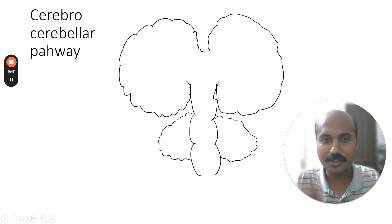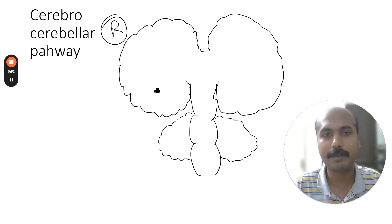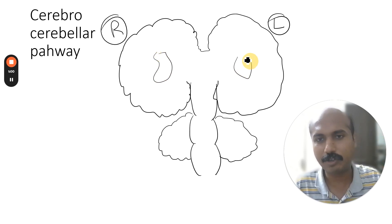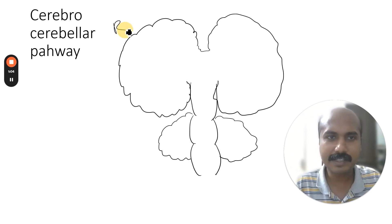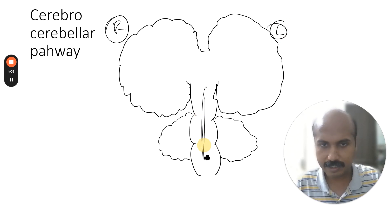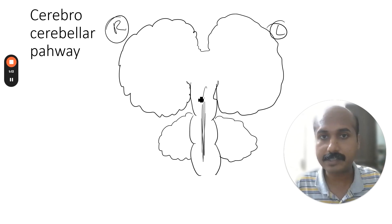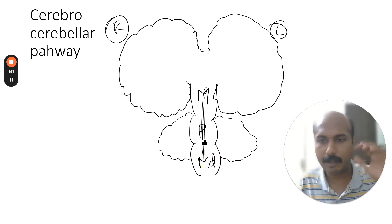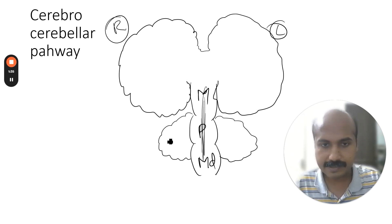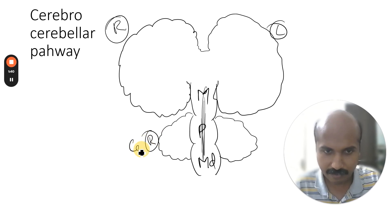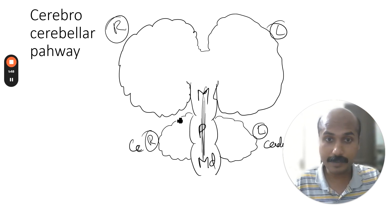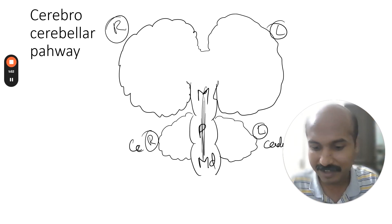These two large things that you see here are the cerebral hemispheres. This is the right-side cerebral hemisphere and this is the left-side cerebral hemisphere. Between them you have the corpus callosum. In the center you have the brainstem, which contains three parts: above is the midbrain, in the middle is the pons, and below is the medulla. Connected behind the brainstem you have the cerebellum — the right and left cerebellar hemispheres.